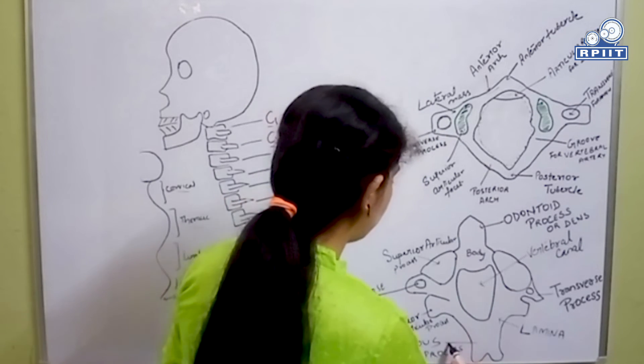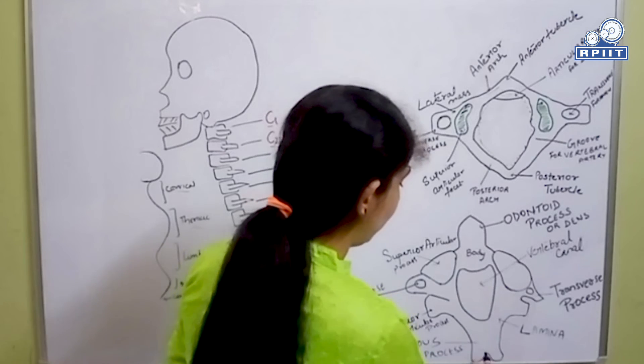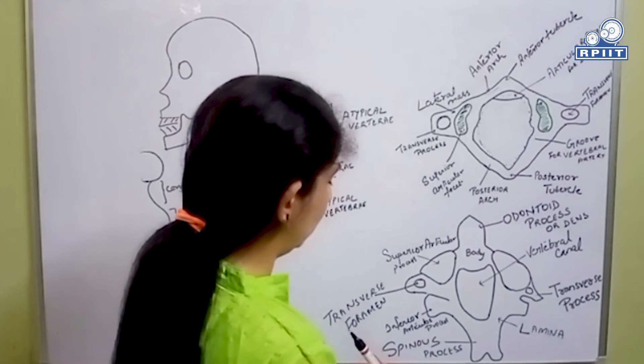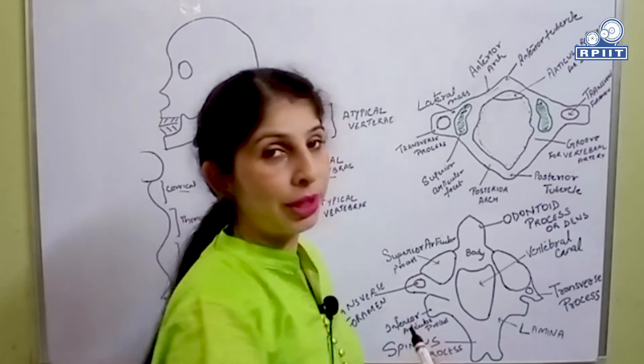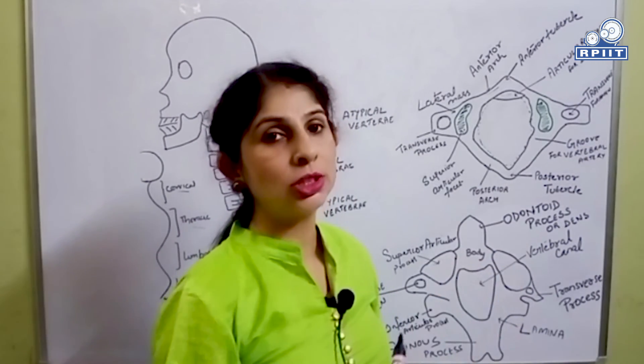This is the spinous process, which is bifid at its tip where the ligamentum nuchae is attached. This covers the C2 vertebra, the axis.